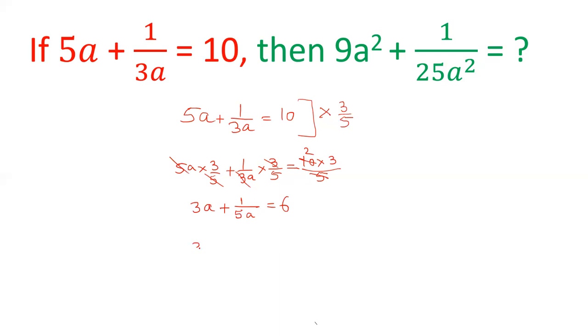Squaring both sides, using a plus b whole square equals a square plus b square plus 2ab, we get 9a square plus 1 upon 25a square plus 2 times 6 by 5 equals 36.